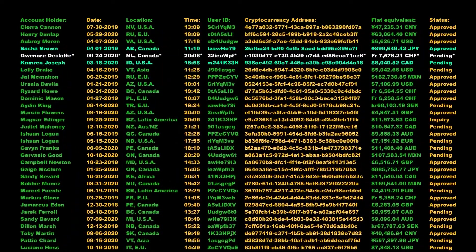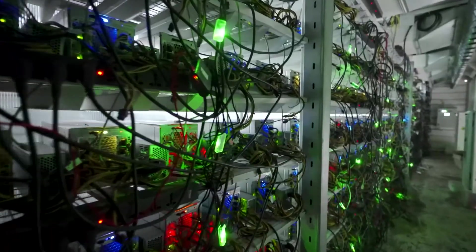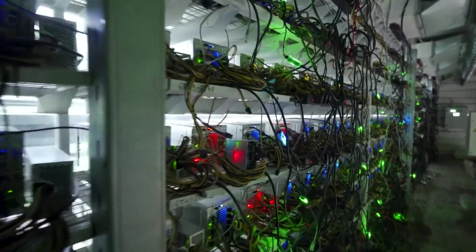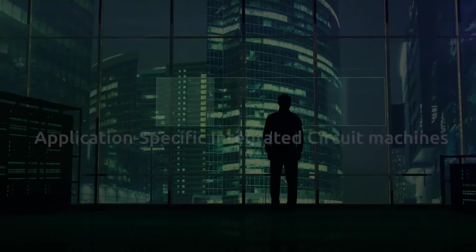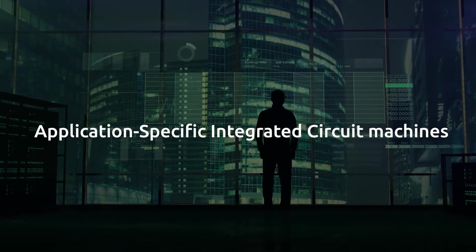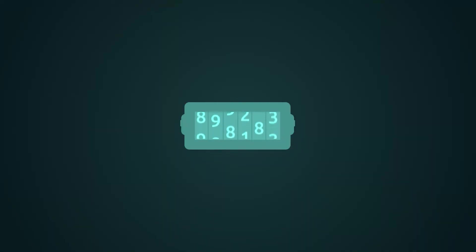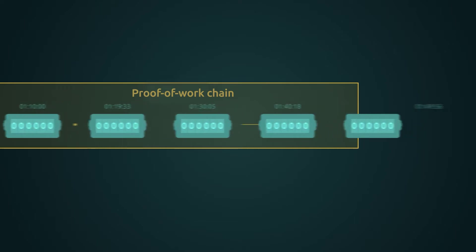Ultimately, these nodes are enterprise-level systems, which means that while anyone is allowed to operate a node, to do so effectively requires the usage of server class hardware, high bandwidth internet, and access to application specific integrated circuit machines, also known as ASICs. These ASICs perform the energy intensive process of generating the proof of work which signals that the block being proposed by the node is worthy of being considered for addition to the chain.